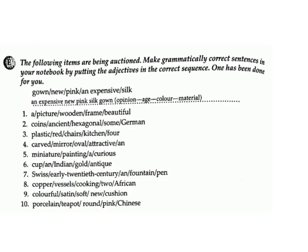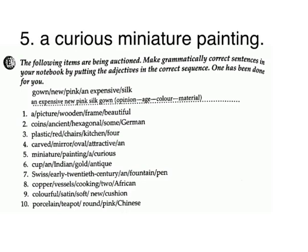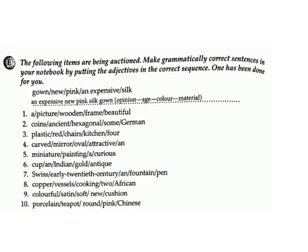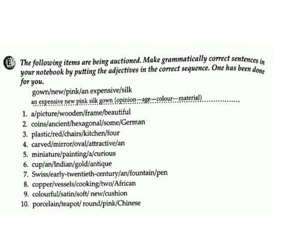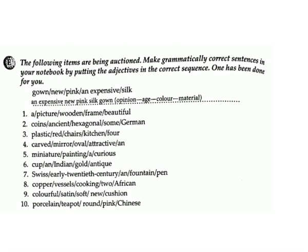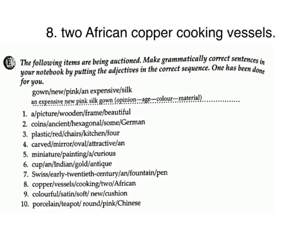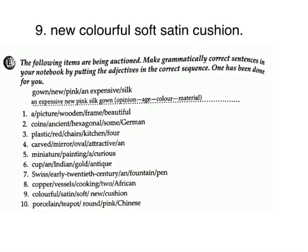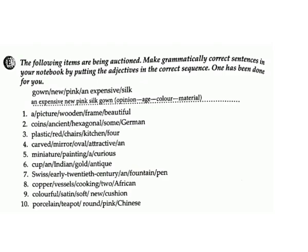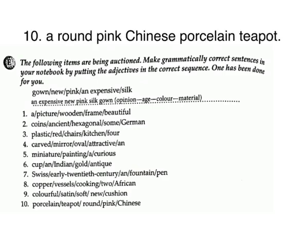5. 'miniature painting a curious.' Answer: a curious miniature painting. 6. 'cup an Indian gold antique.' Answer: an antique gold Indian cup. 7. 'Swiss early 20th century an fountain pen.' Answer: an early 20th century Swiss fountain pen. 8. 'copper vessels cooking 2 African.' Answer: 2 African copper cooking vessels. 9. 'colorful satin soft new cushion.' Answer: new colorful soft satin cushion. 10. 'porcelain teapot round pink Chinese.' Answer: a round pink Chinese porcelain teapot.